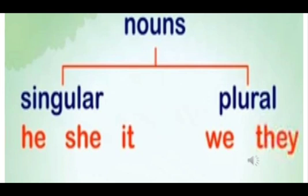He, she, and it are singular — that means they are used for one person or thing. We and they are plural — that means they are used for more than one person.